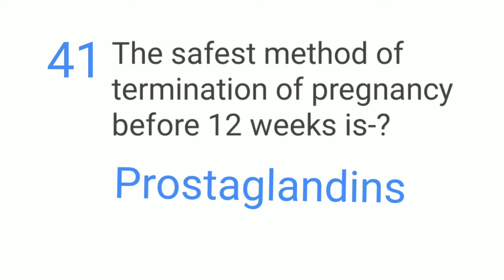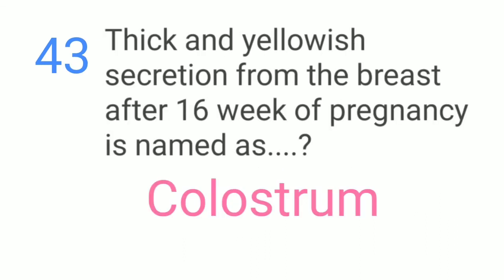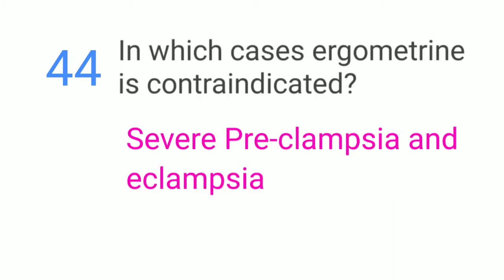The safest method of termination of pregnancy before 12 weeks is prostaglandins. The safest position for a woman in labor with a collapsed cord is the Trendelenburg position. Thick and yellowish secretion from the breast after the 16th week of pregnancy is named as colostrum.